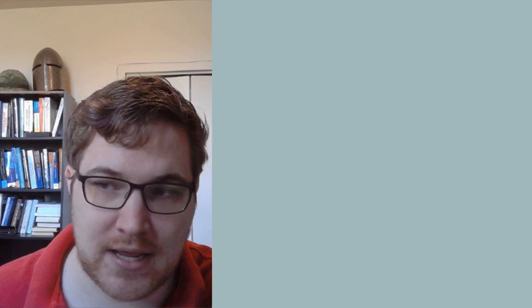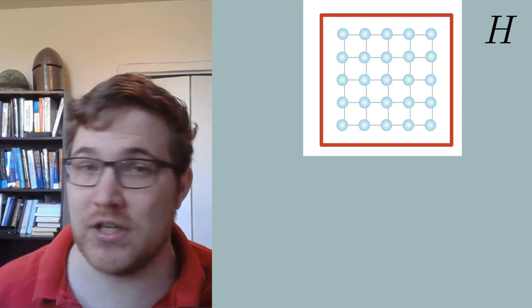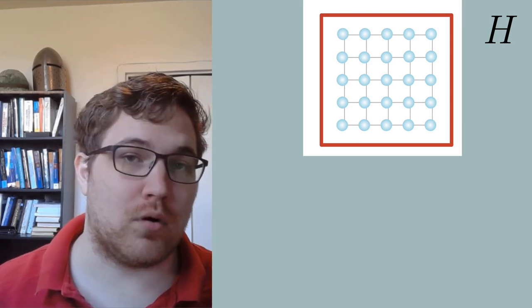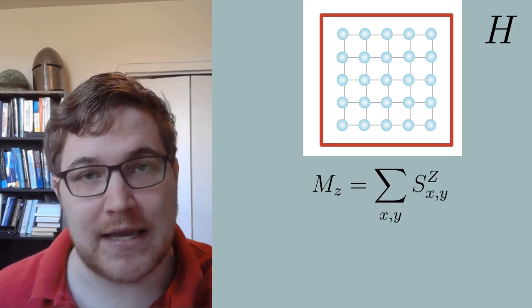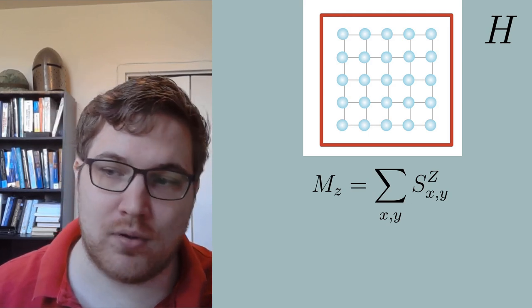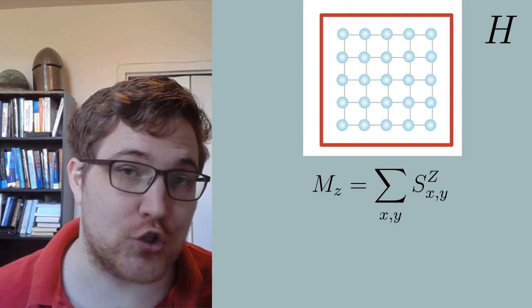Oftentimes, the Hamiltonian we work with has underlying symmetries. These end up being powerful tools for us to do block diagonalization. To illustrate this, we will assume that our Hamiltonian H is again acting on a lattice, but now we'll talk about the fact that it conserves the total magnetization in the Z direction. We write the operator for the magnetization in the Z direction as a sum over all of the spin one-half operators in the Z direction. Here we assume that our two-dimensional lattice in this example has some points on the lattice labeled by X and Y.